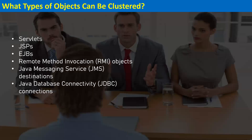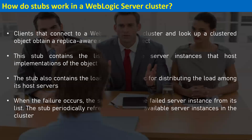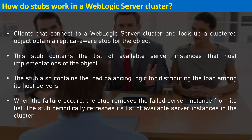How do stubs work in WebLogic Server? Clients that connect to a WebLogic server cluster and look up a clustered object receive a replica-aware stub for that object. This stub contains complete information about all managed servers running in the cluster and their state. If there are four managed servers, the client application session gets a replica-aware stub containing the complete cluster information — the number of managed servers and their running state.